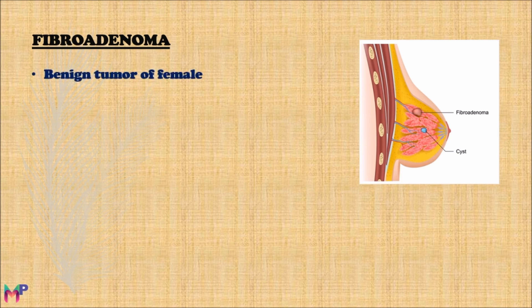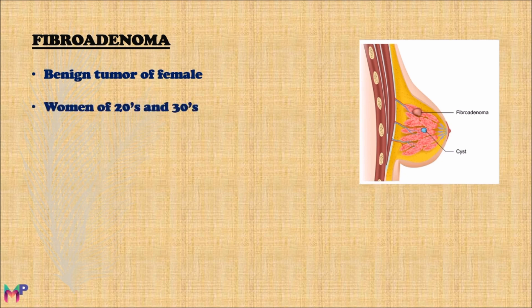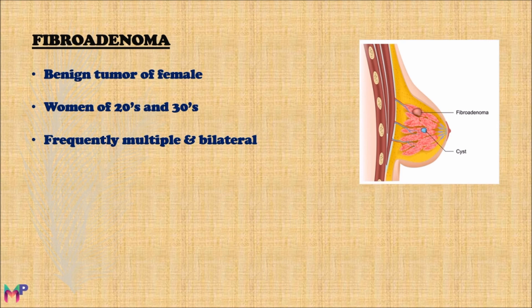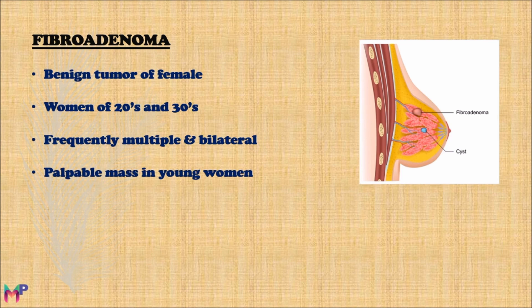Fibroadenoma is a benign tumor of the female breast and is the most common benign tumor. As it is benign, there is little or no risk of carcinoma development. It is seen in women in their 20s and 30s, a very young age. It is frequently multiple and bilateral — multiple nodules may be present and it may occur in both breasts. It presents as a palpable mass in young women.